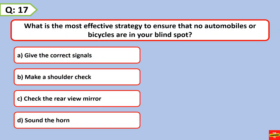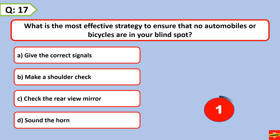What is the most effective strategy to ensure that no automobiles or bicycles are in your blind spot? Make a shoulder check.